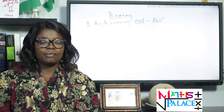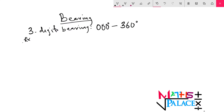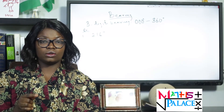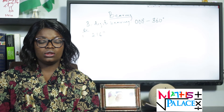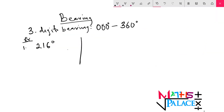Now let's look at examples of three-digit bearing. We have 216 degrees. As you can see, 216 is already three digits. This bearing is taken from the north, that is from zero to three-sixty. Take note that from the north, it is zero.